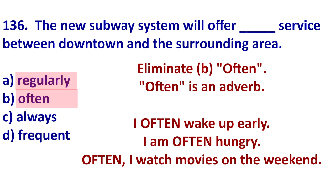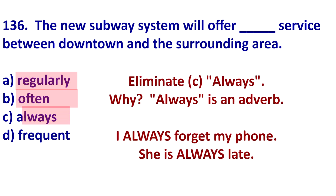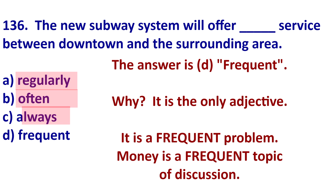Then let's look at 'often' — 'often' is also an adverb; it describes a verb. For example, 'I often post lessons,' but it does not describe a noun. Then we look at 'always' — 'always' is also an adverb, not an adjective. It can describe a verb, like 'I always forget my phone,' or an adjective, like 'he is always hungry.' But 'always' is not an adjective. We need an adjective here, and the only adjective is D: 'frequent.'